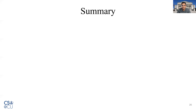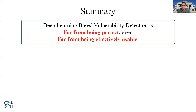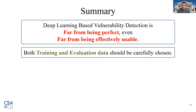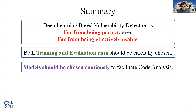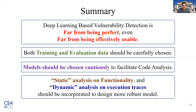Finally, to summarize, the main takeaways from this paper are: deep learning-based vulnerability detection is far from being perfect and even far from being effectively usable in a development pipeline; to improve the technique, both training and evaluation data should be carefully chosen; the models should be carefully chosen to facilitate code analysis; and in the future, static analysis on functionality and dynamic analysis on execution traces should be incorporated into the model to design a robust model for detecting vulnerabilities in source code.